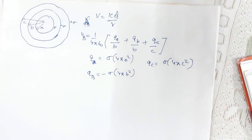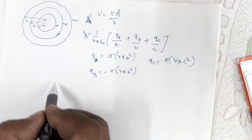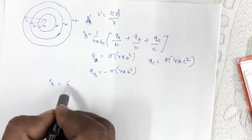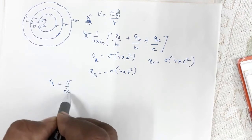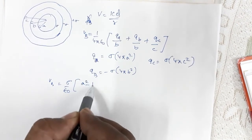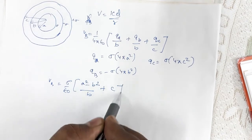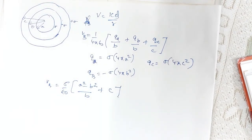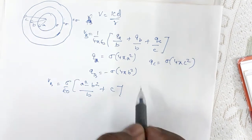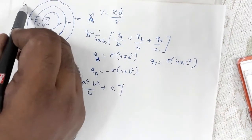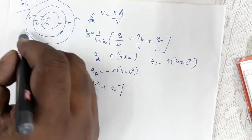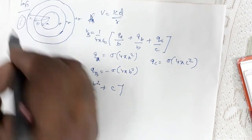Substituting all values, V_b = (σ/ε₀) × (a²/b − b + c). Checking the options, this corresponds to option 1. So for question number 66, the correct answer is option 1.